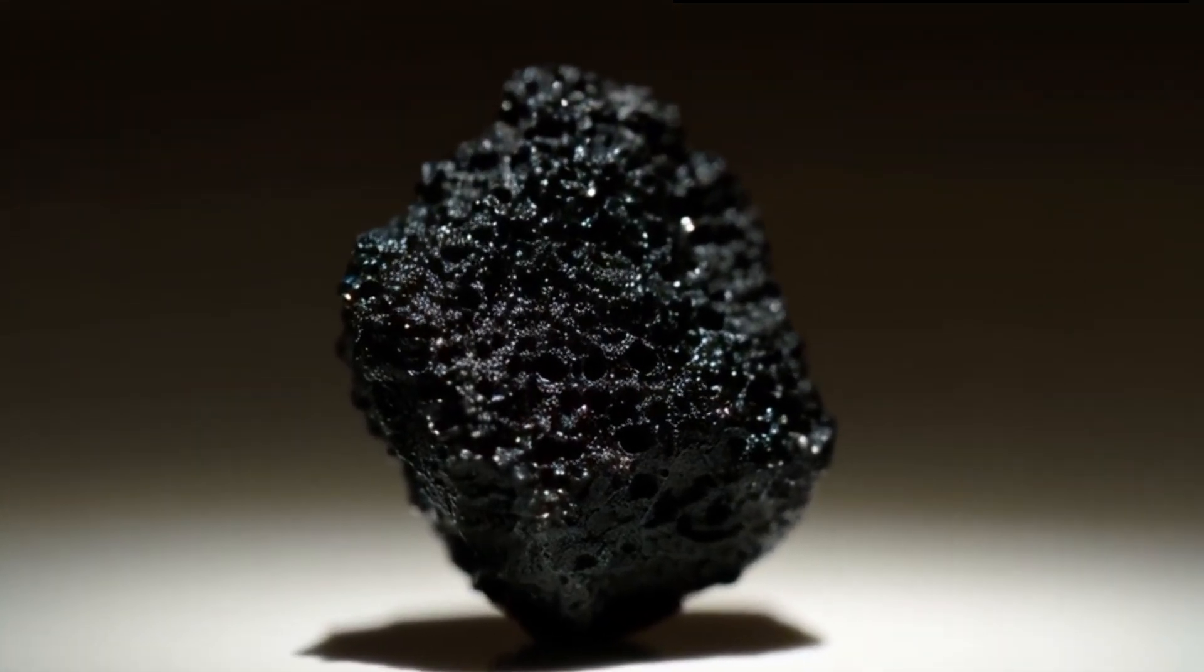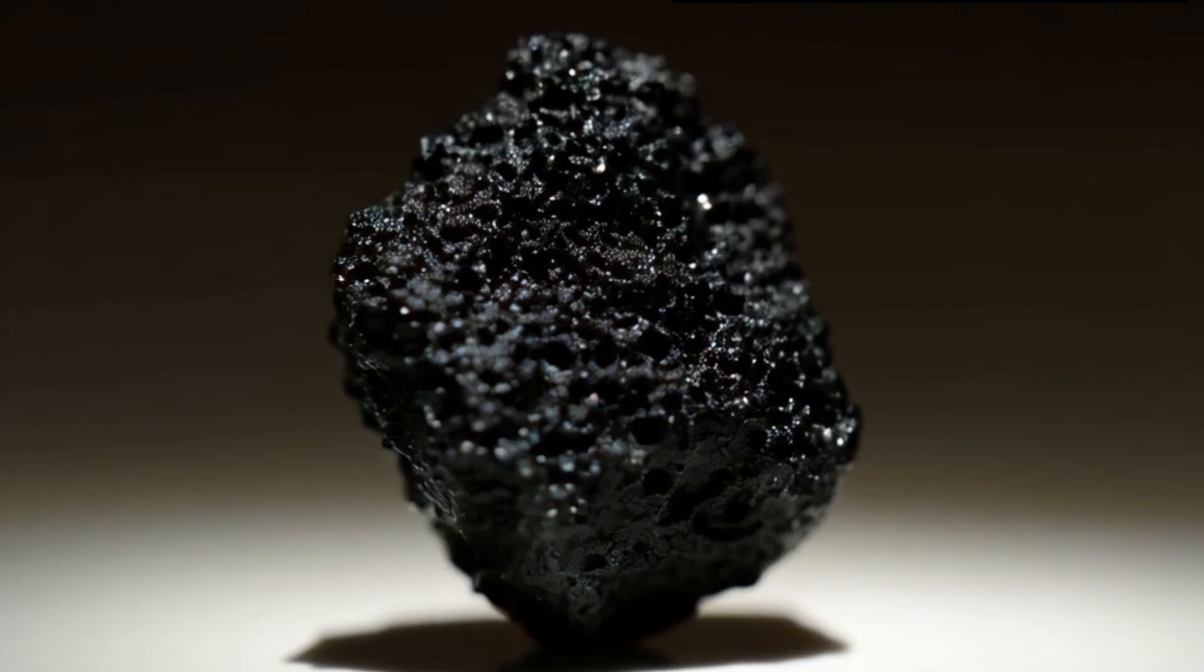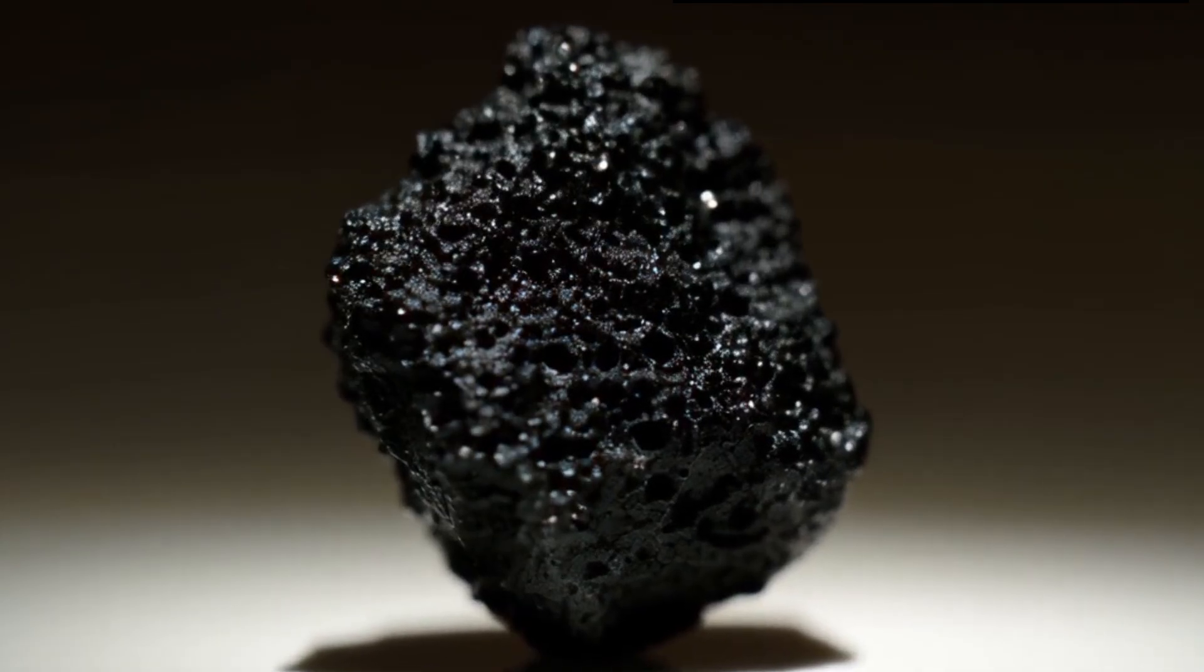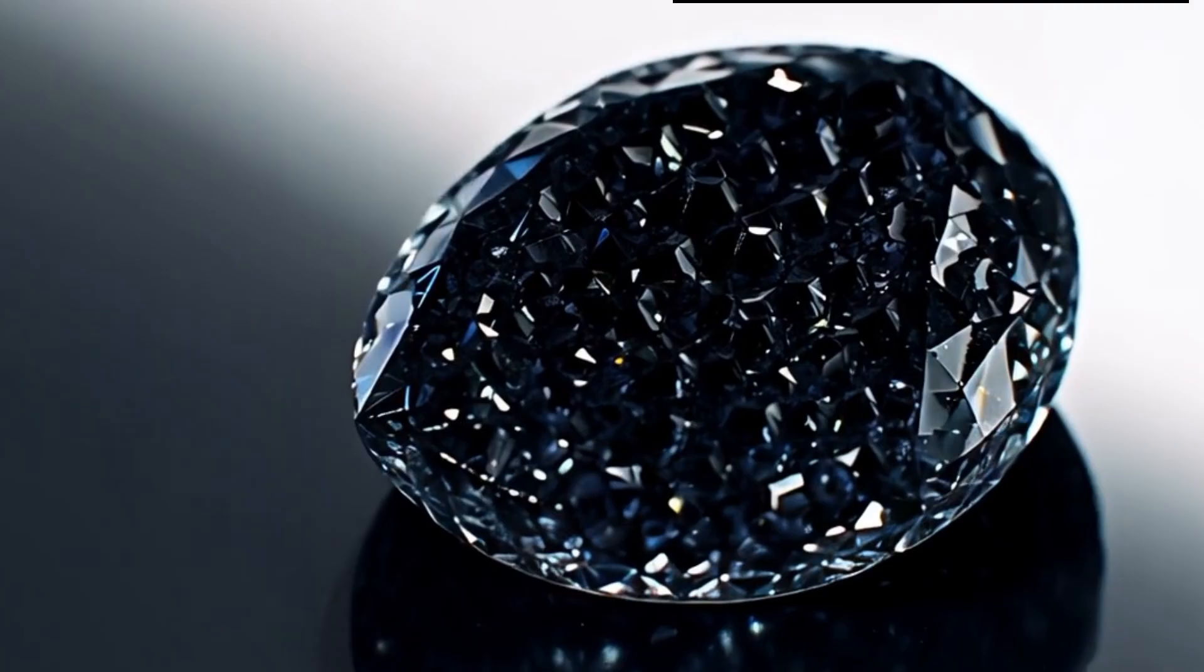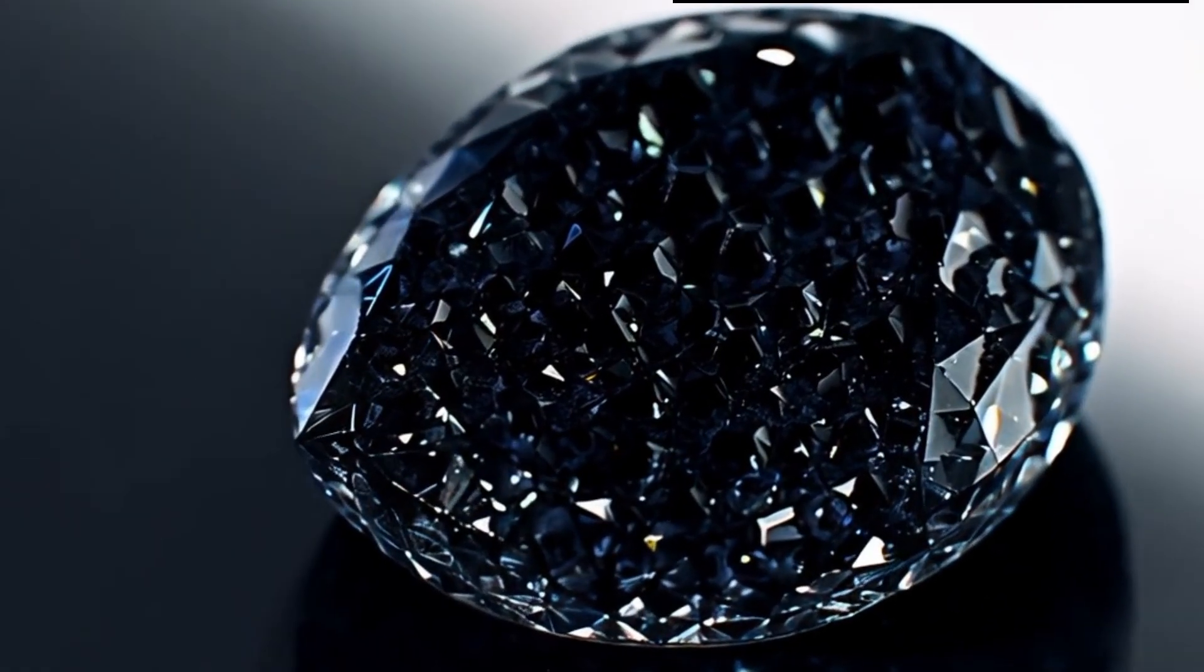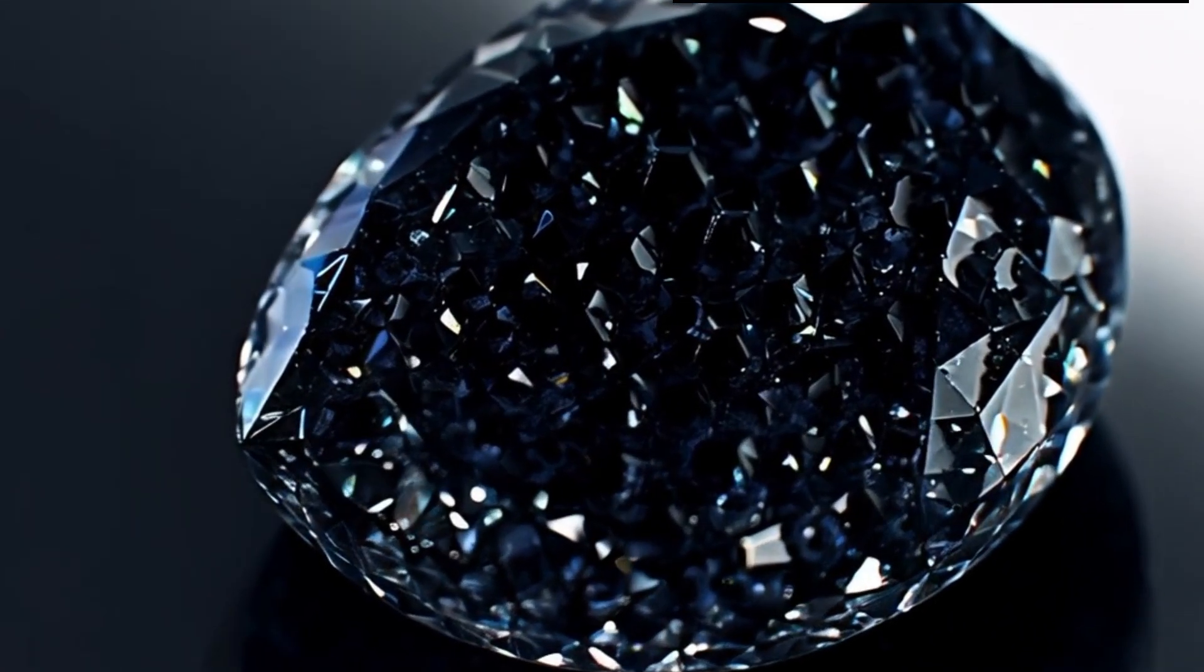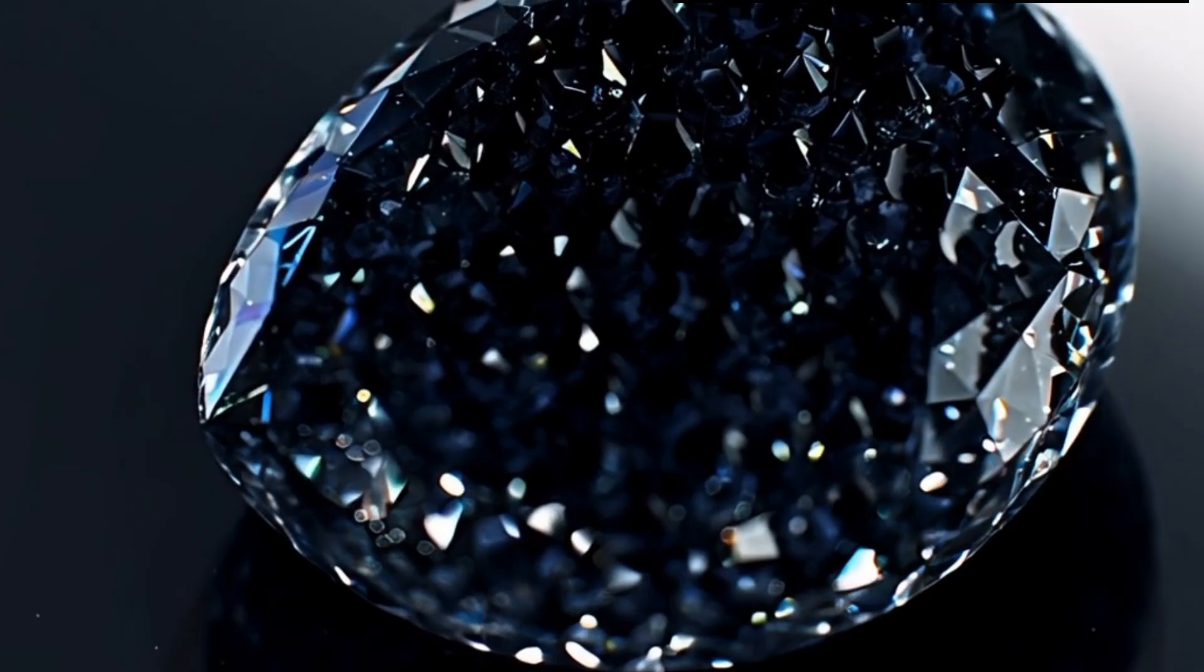Number seven, magnification test. Use a jeweler's loupe or a magnifying glass. A genuine carbonado often shows small inclusions, grainy patterns, or tiny crystals inside. A fake stone may look too perfect or show air bubbles, a sign of glass.